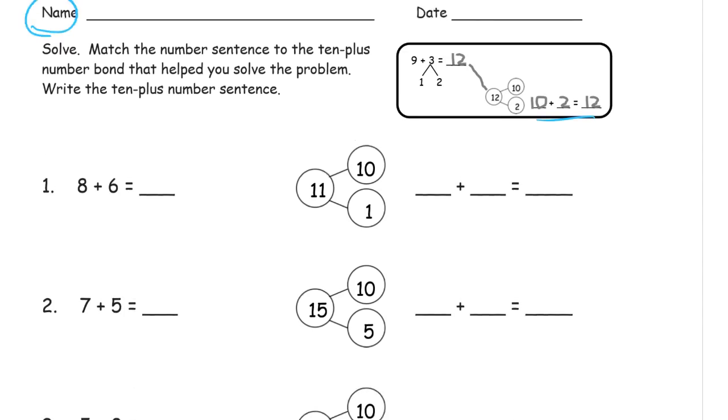That works because 10 is so easy to add to. You just want to keep thinking, there's an 8, I'm thinking where can I find a 2? Well, there isn't one there, but I'm going to get one out of the 6, and there's going to be 4 left when I'm done.